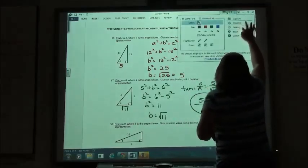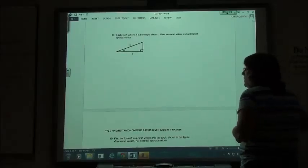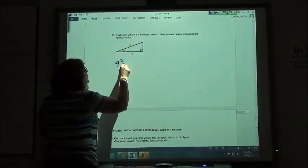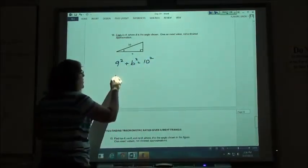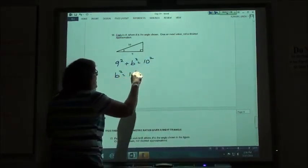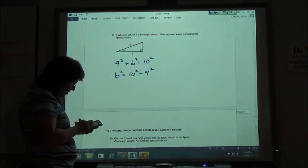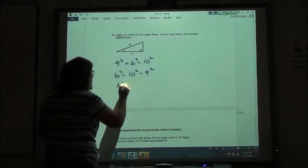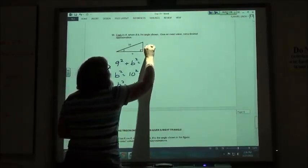And the next one here, if we look at number 18, we would say that 9 squared plus B squared equals 10 squared. So B squared is 10 squared minus 9 squared. 10 squared minus 9 squared is 19. So B squared equals 19. B is going to equal the square root of 19 then.